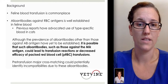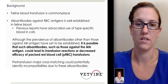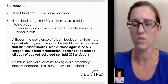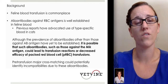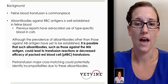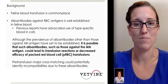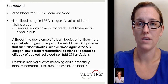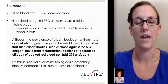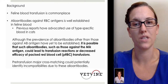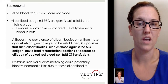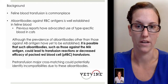Alloantibodies are present against red blood cell antigens, and that's been well established in feline blood. The most common one we're familiar with is type A blood having anti-B alloantibodies already naturally present. We have to be giving type-specific blood transfusions in cats, or we're going to see some pretty life-threatening hemolytic transfusion reactions.